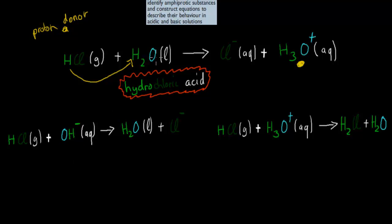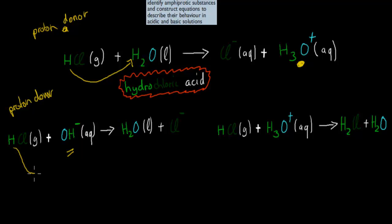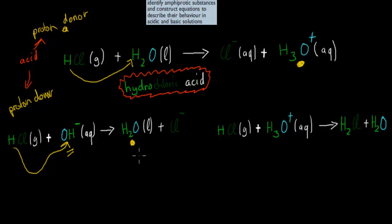Now, if we didn't have water in solution but had a hydroxide instead, the same thing would happen. Hydrochloric acid would still act as a proton donor, thereby acting as the acid, because it gives its hydrogen to the hydroxide ion, making it into water. So in both cases, it acts as the acid because it has donated a proton.